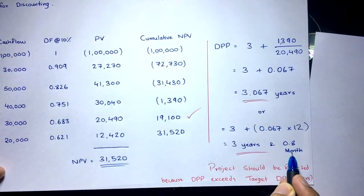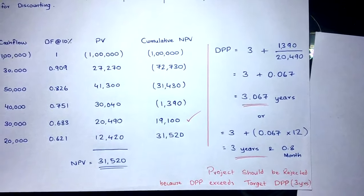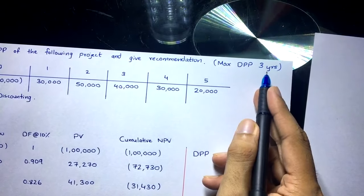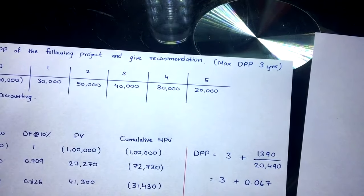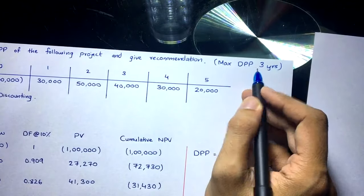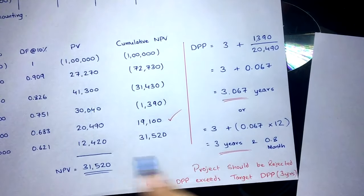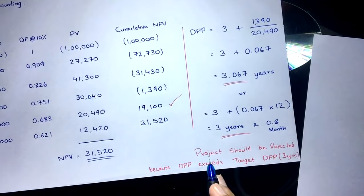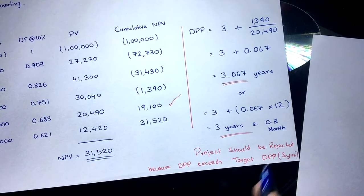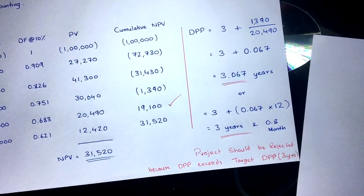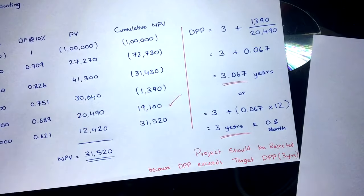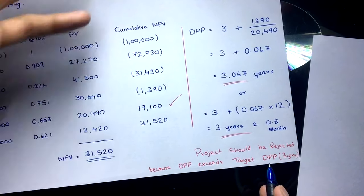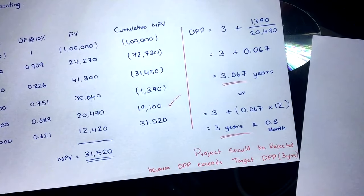Since the DPP of this project is three years and approximately one month, it exceeds the target DPP of three years given by management. Therefore, the recommendation is to reject this project, as the discounted payback period exceeds the maximum target DPP provided.